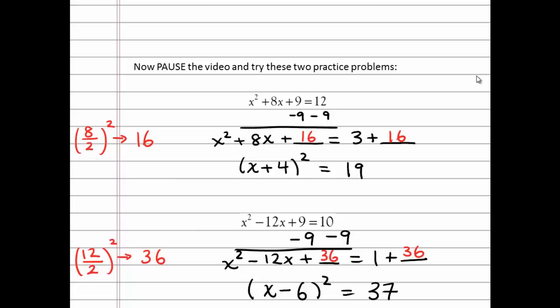In your second example here, the b value is negative 12, so if I take that value, divide it by 2, and square it, I'll get positive 36.